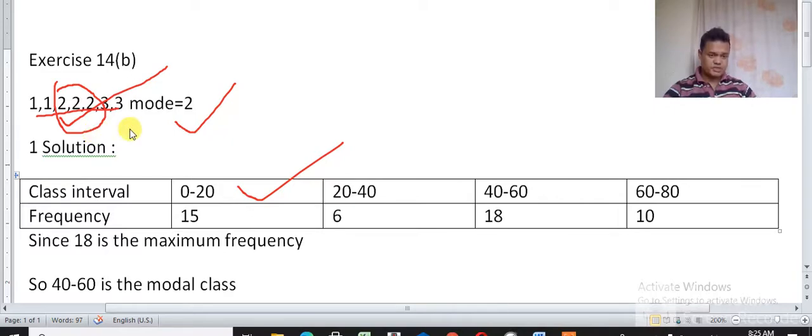Here we know the actual numbers, but in case of grouped class in the frequency distribution table we don't know the actual numbers. So we first find the maximum frequency. The class containing the maximum frequency - here maximum frequency is 18 and the class corresponding to this frequency is 40 to 60. So this will be the modal class, meaning that particular number will be in the class 40 to 60.